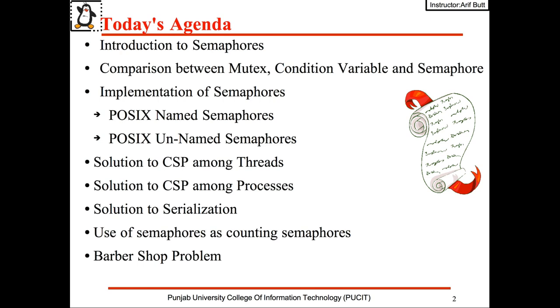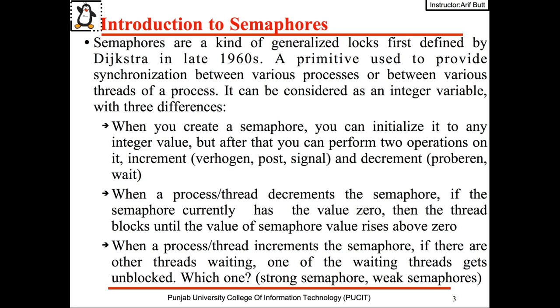This slide shows the agenda of today's session. Semaphores are a kind of generalized locks defined by Dijkstra in the late 60s. It is a primitive used to provide synchronization between various processes or between various threads of a process. It can be considered as an integer variable with three differences: when you create a semaphore you can initialize it to any integer value, but after that you can perform two operations on it — increment and decrement.